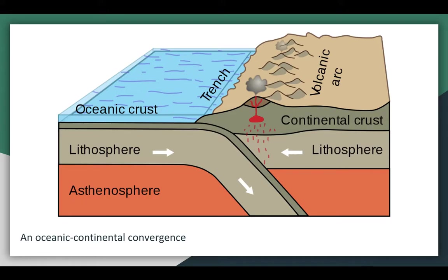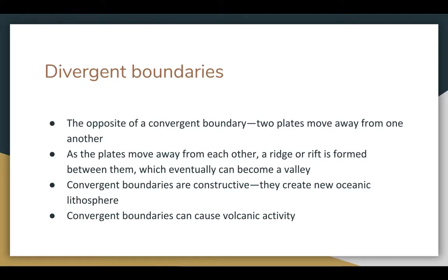Here is a diagram of an oceanic-continental convergence. You can see in this situation the oceanic crust is going beneath the continental crust, and that creates a trench. Next are divergent boundaries, which are the opposite of a convergent boundary — two plates are moving away from one another. As they move away from one another, a ridge or a rift is formed between them, and that can eventually become a valley. Divergent boundaries are constructive because they create new oceanic lithosphere.